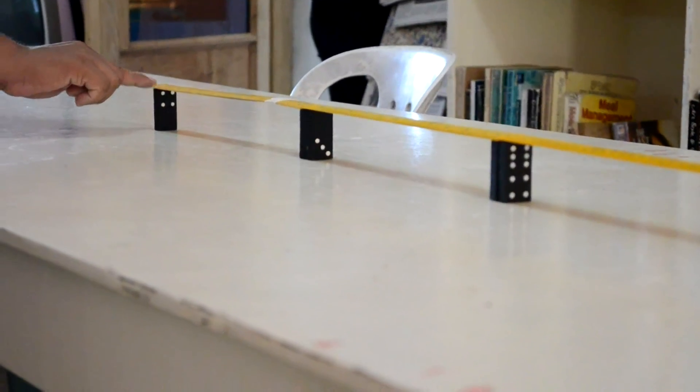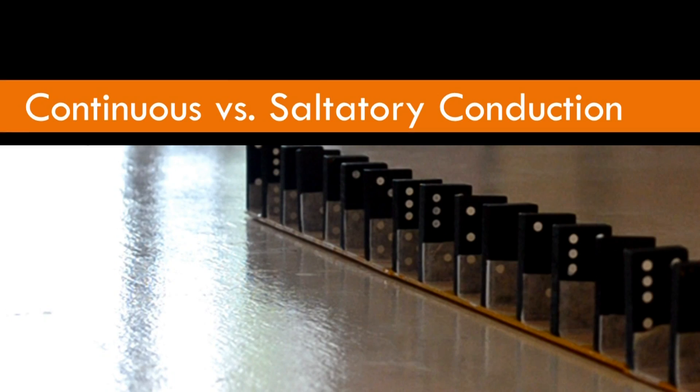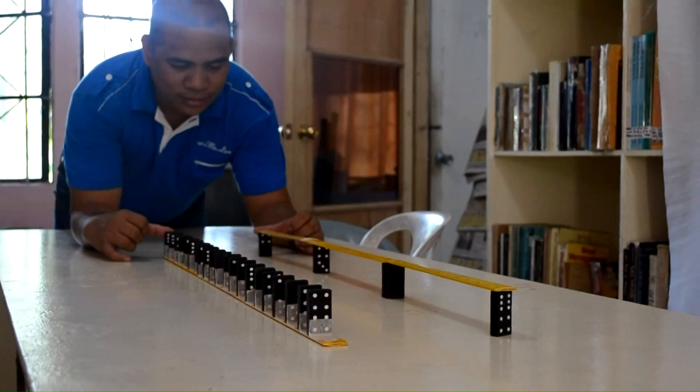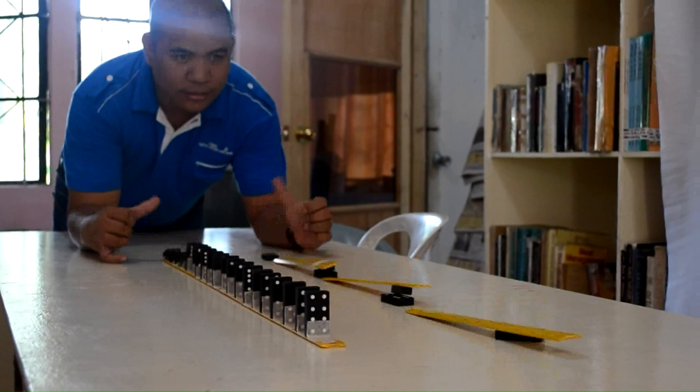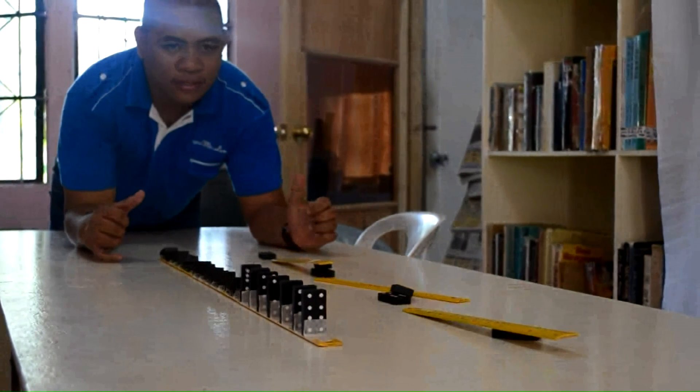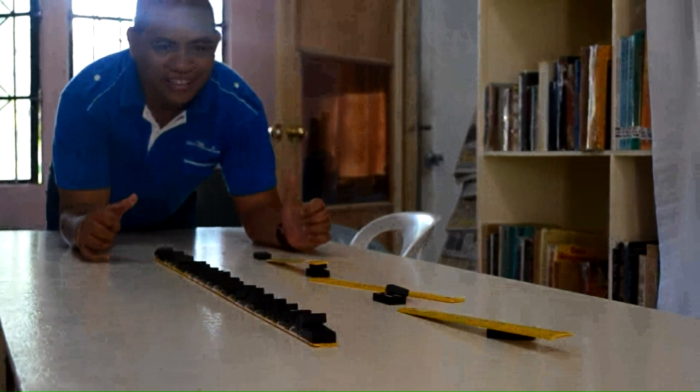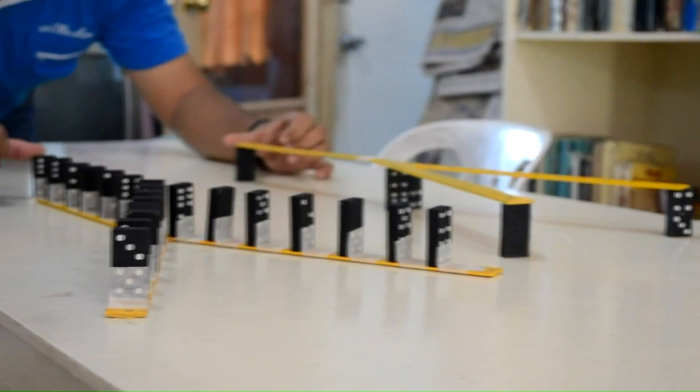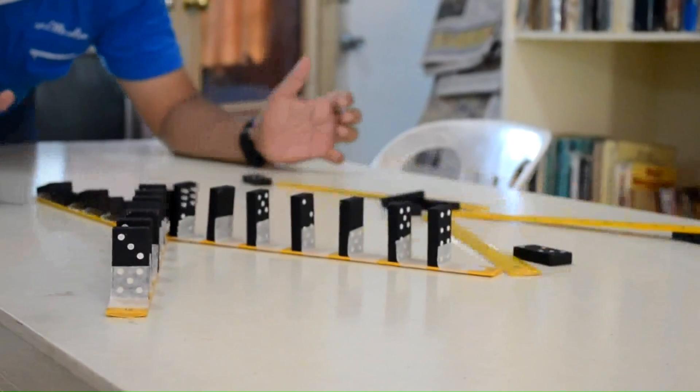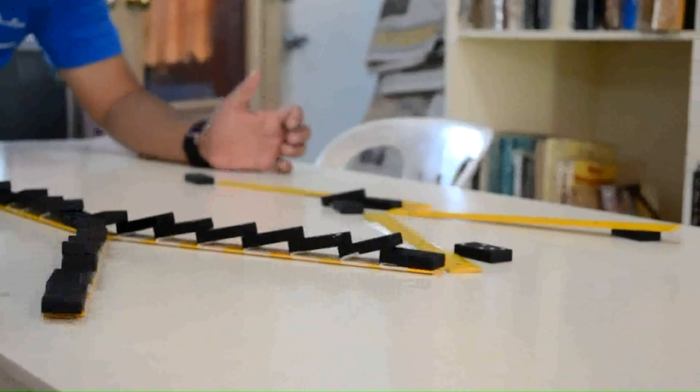The dominoes can also be used to demonstrate how myelination increases the speed of transmission. The action potential travels faster if it can jump from node to node rather than having to pass on sequentially. This is called saltatory conduction and the nodes are called the nodes of Ranvier.